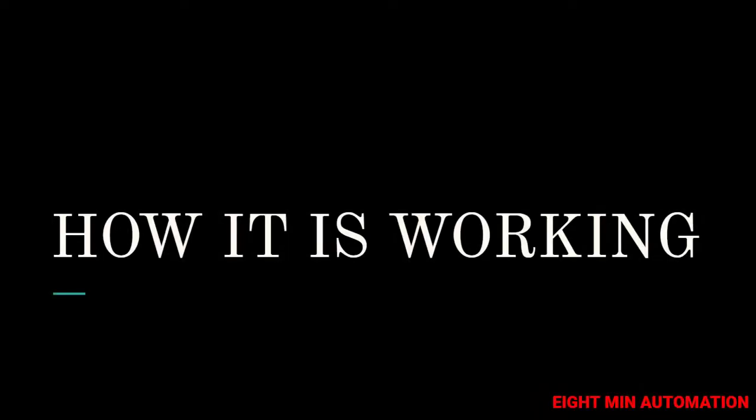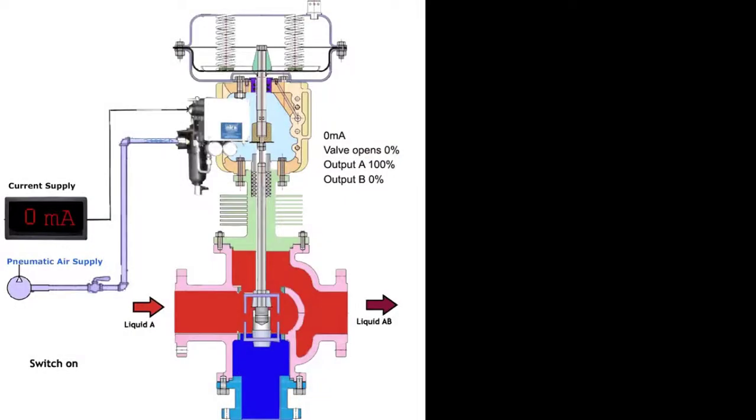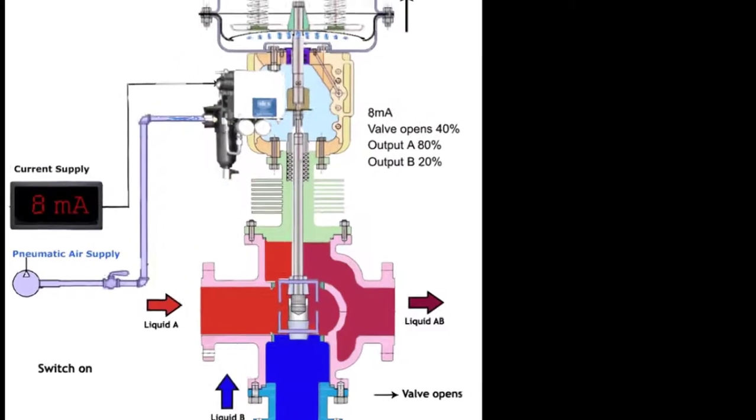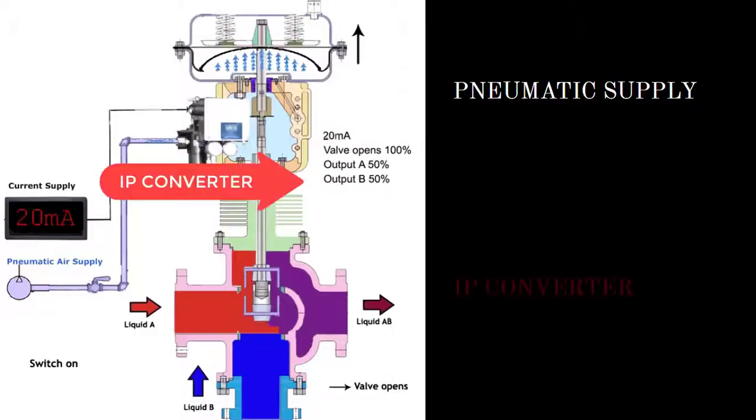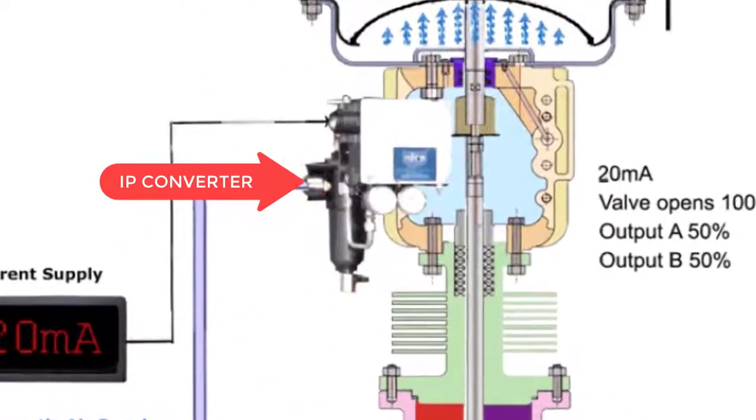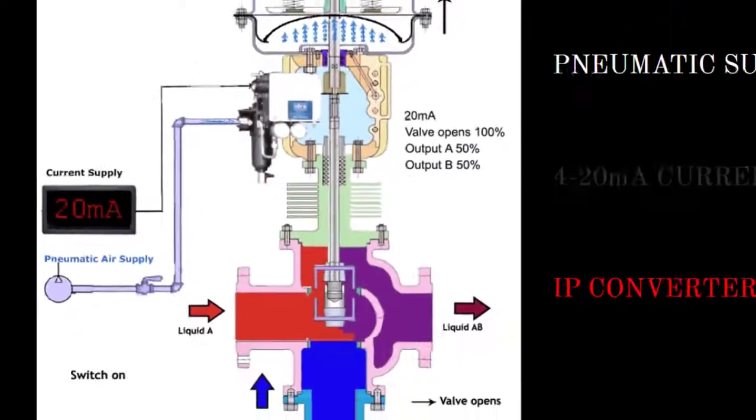Now let's go to the working. A control valve needs these three things: a pneumatic air supply, an IP converter, and a 4-20mA current supply.